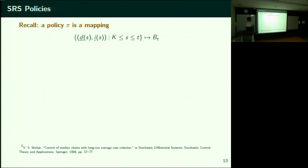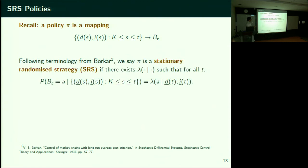I should admit my mistake — I need all the past BTs too, and then select the next location. A policy is doing this at each time: based on all the information, decide where to look next. This mapping could depend on the entire past. The most general class for which analysis is available is one where BT is selected depending on the current state only.